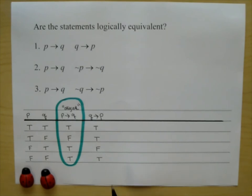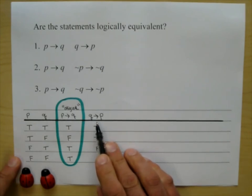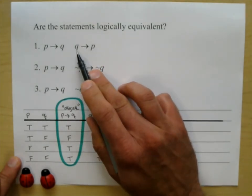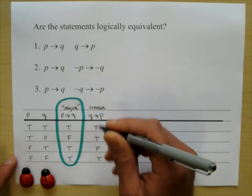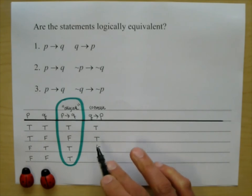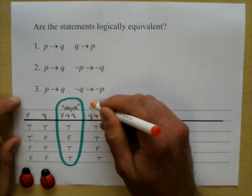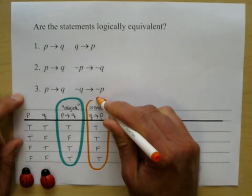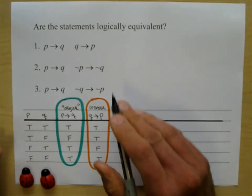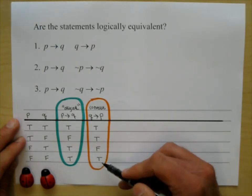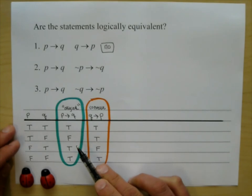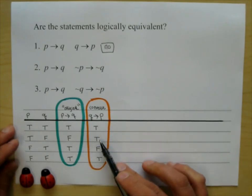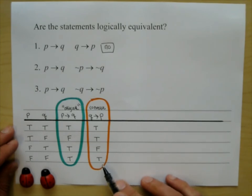This statement has a name we learned last lecture. If you take the original and swap the hypothesis with the conclusion, you have the converse. The converse does not have the same truth values as the original — they don't match. So the answer is no: a conditional statement is not logically equivalent to its converse. People sometimes assume it is, and that's where they get in trouble with logic.